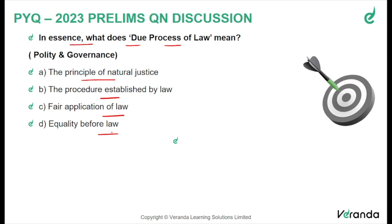Due process is defined as just, reasonable, fair, and equitable treatment during routine legal proceedings. We should clearly understand what this due process of law is. As a result, it refers to the impartial application of the law. So the right answer to this question is Option C — that is, the fair application of law.